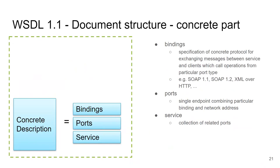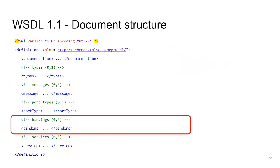The concrete description consists of bindings, ports, and service. Bindings bind operations and messages to specific transport protocols such as SOAP, though that is not the only option. We will see an example of binding directly to HTTP without SOAP. A typical binding is SOAP over HTTP. We use this binding and connect it to a specific URL where the web service lives — that is the port — and multiple ports grouped together form a service.